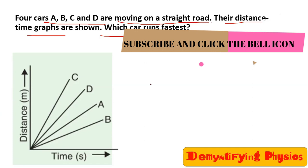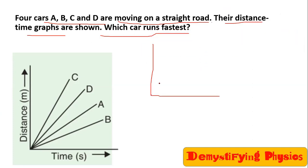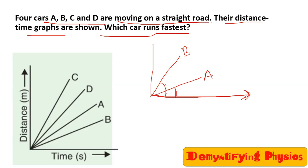Now remember, the slope is the perpendicular upon the base. If you compare the slope of two lines, check the angle they make with the x-axis, which is the time axis. As the angle increases, the slope increases. So the slope of B is greater than the slope of A.